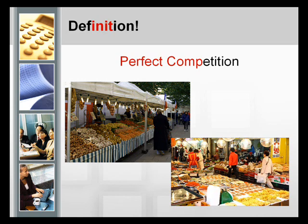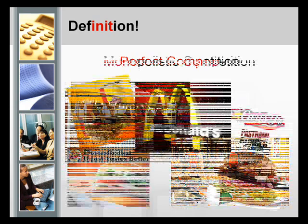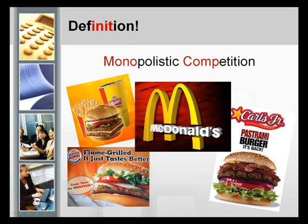For example, in a traditional market, as we can see from the picture, every seller is selling similar products such as fruits and vegetables. Unlike perfect competition, a monopolistic competition market is one in which many firms sell products that are similar but not identical.